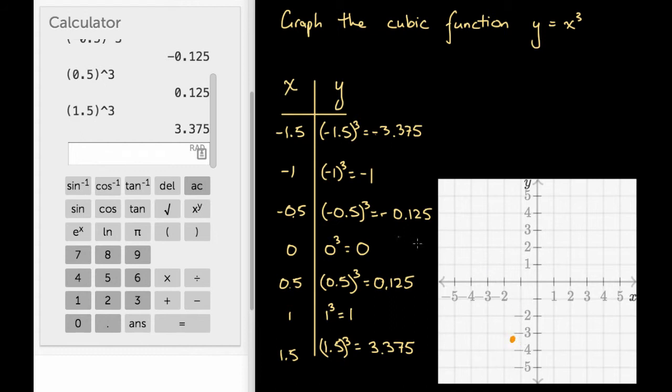It's not going to be perfect, but that's good enough. Next up we've got x equals minus 1 and y equals minus 1. That's going to be the point 1 unit left of the origin and 1 unit down. That's going to be there.